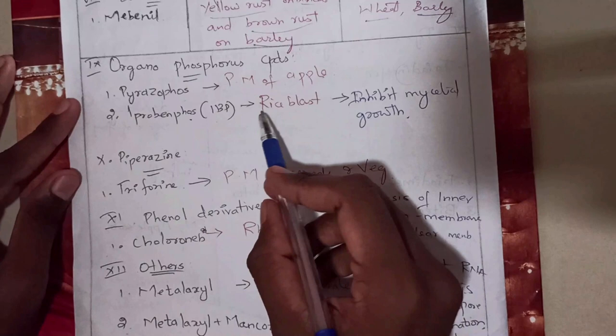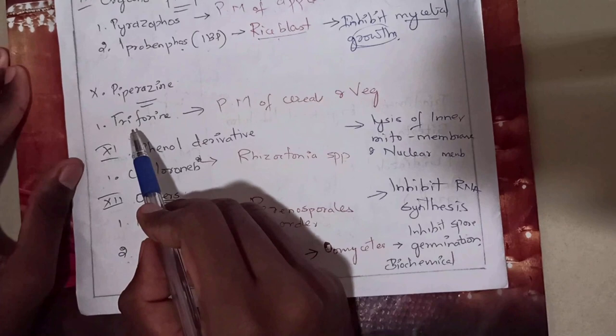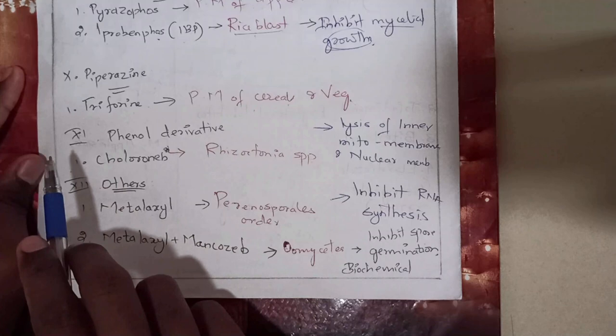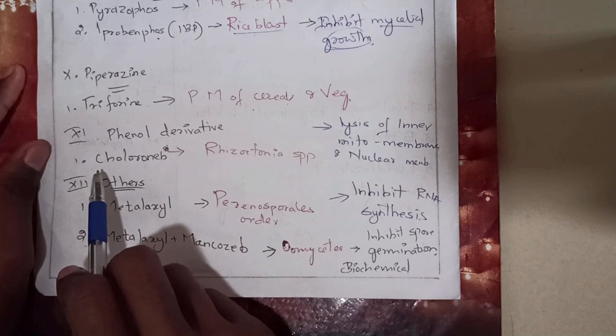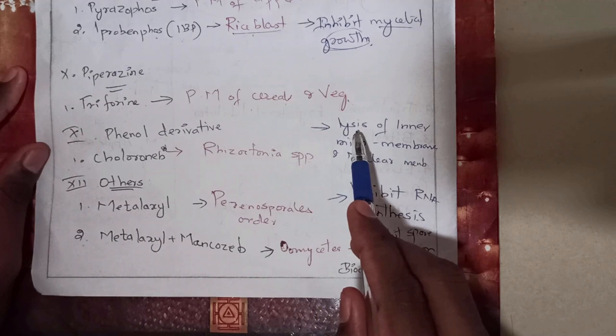The tenth group is piperazines. The first compound is triforine, used against powdery mildew of cereals and vegetables. The eleventh group is phenyl derivatives. The compound is chloroneb, used against Rhizoctonia species causing root rot of crops. Its mode of action involves rupturing the inner mitochondrial membrane and also the nuclear membrane of fungi.